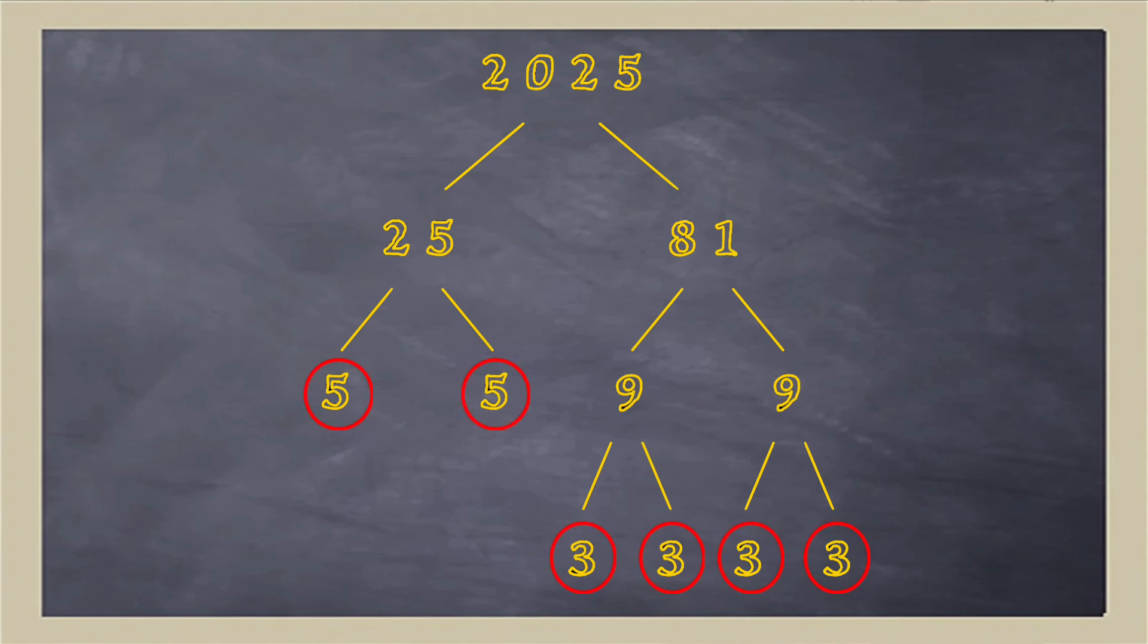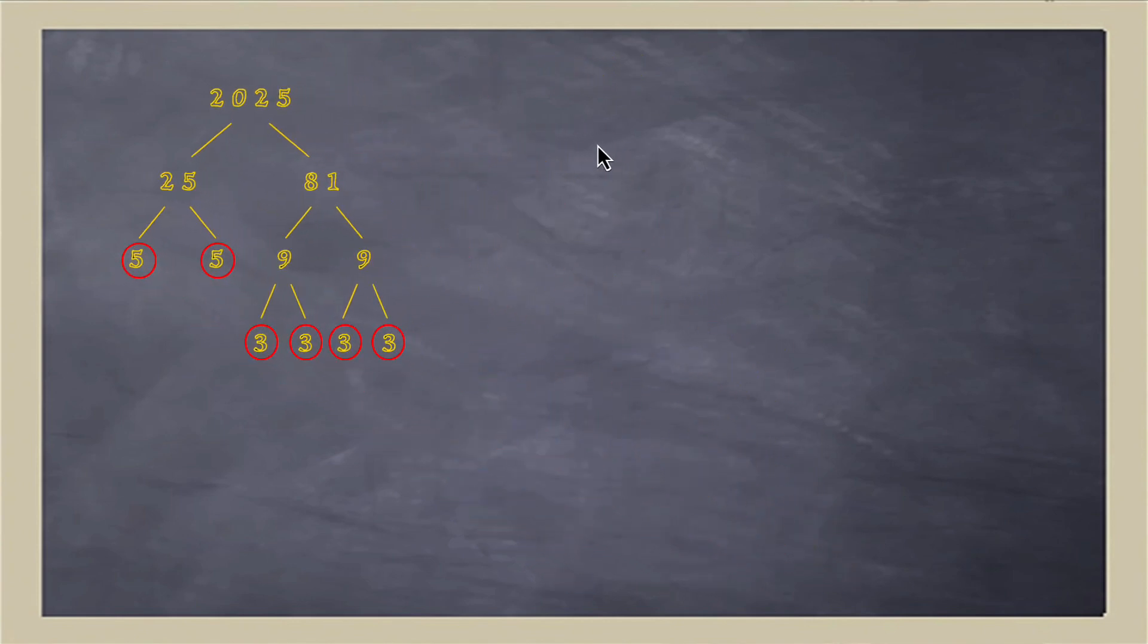So it's made from four threes and two fives. Having used the factor hammer to smash 2025 up, let's find out what we've discovered. We now know that 2025 has ingredients, the basic prime numbers that make it up: four threes and two fives all multiplied together. We've discovered the prime factorization of the number 2025. It's three to the power four and five to the power two.